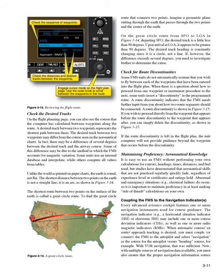Check for route discontinuity. Some FMS units do not automatically assume that you wish to fly between each of the waypoints that have been entered into the flight plan. When there is a question about how to proceed from one waypoint or instrument procedure to the next, some units insert a discontinuity in the programmed route. A route discontinuity indicates that the FMS needs further input from you about how two route segments should be connected. If you wish to proceed directly from the waypoint before the route discontinuity to the waypoint after, you can simply delete the discontinuity. If the route discontinuity is left in the flight plan, the unit computer will not provide guidance beyond the waypoint that occurs before the discontinuity.